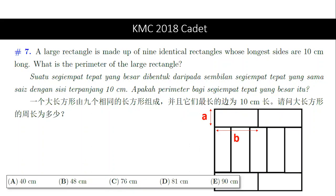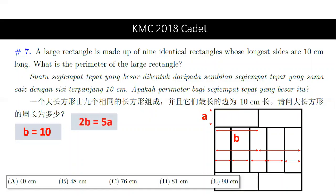From clue number 2, we can write B is equal to 10. From the diagram, we can also see that the 2 long arrows' length is equal to 5 short arrows. Hence, we can write 2B is equal to 5A. Since B equals 10, then 2B equals 20, and so 20 equals 5A, giving us A is equal to 4.